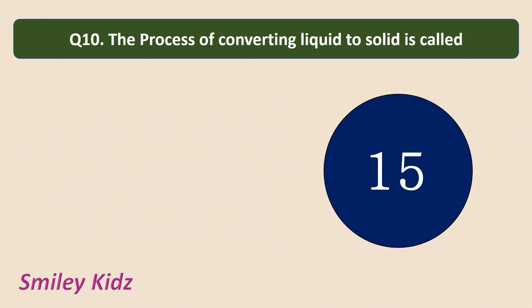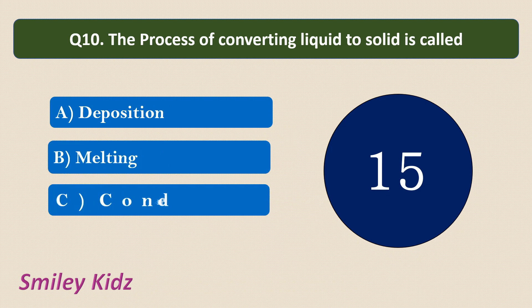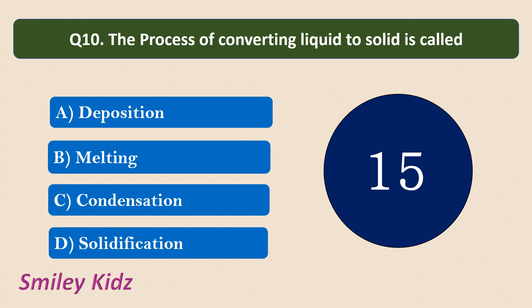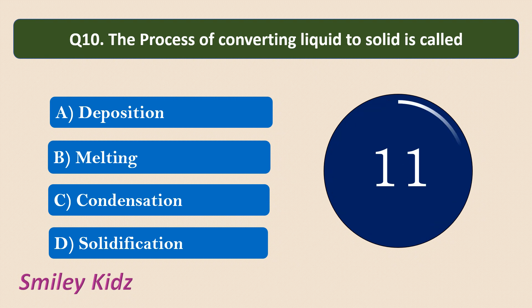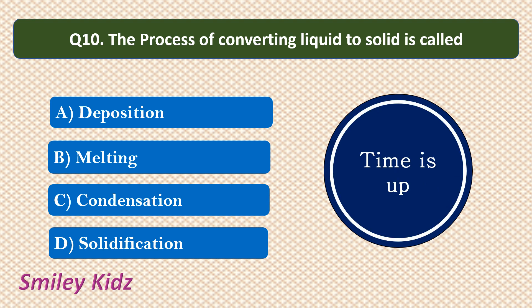Question number 10. The process of converting liquid to solid is called? Your options are Deposition, Melting, Condensation, or Solidification. Your time starts now. Your time is up and the correct answer is Solidification. Liquid to solid is called Solidification.